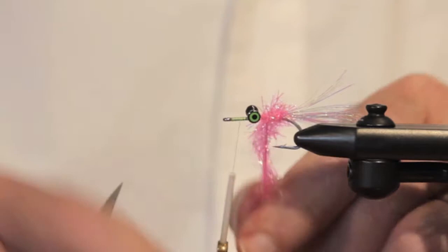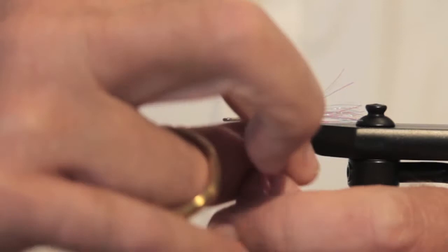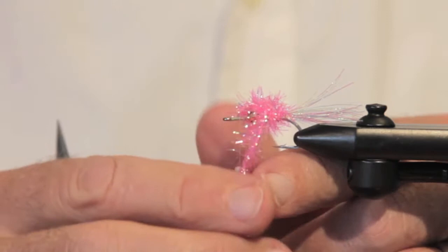But when the fish have been in for even just a little bit, and they've seen some other hooks, some other flies, they will get a lot cagier.